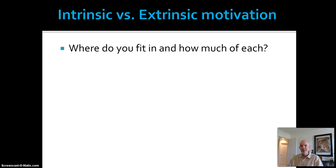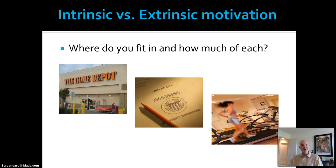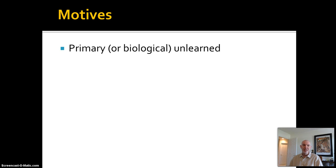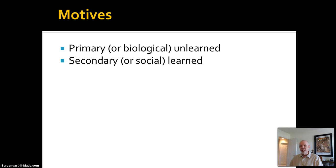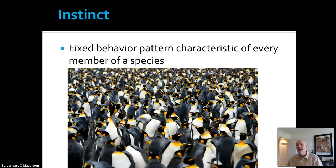Think about your motivation at work, at school, or at the gym — where do you fall on the spectrum of intrinsic versus extrinsic motivation? Motives and motivation can be primary or biological — that is, they're unlearned; we come wired that way. Or they can be secondary or social — that is, they are learned. Instinct is a pure example, maybe the purest example of biological motivation, which we define as a fixed behavior pattern that is characteristic of every member of the species and is assumed to be genetically programmed.